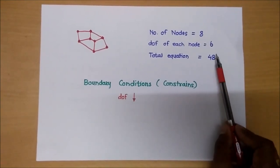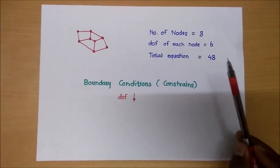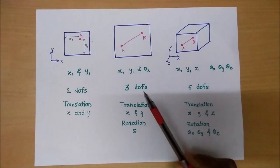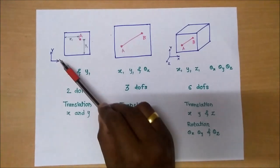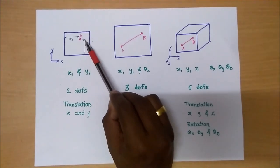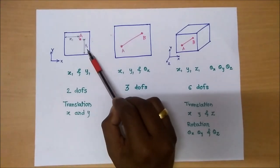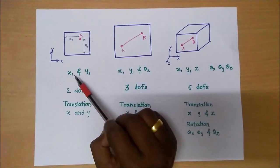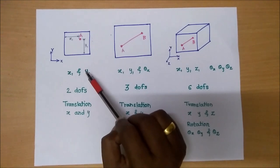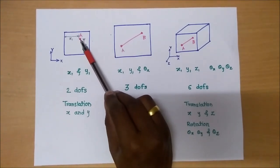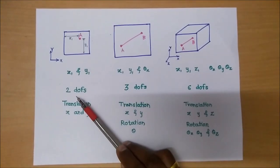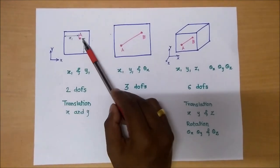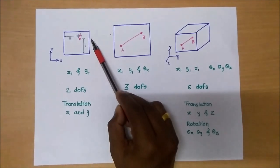So the maximum possible number of equations we have to solve is 48. Now let's take one point A in the XY plane. This point is defined by coordinates X1 and Y1, where X1 indicates the horizontal distance and Y1 indicates the vertical distance. Two parameters — these two coordinate values — are required to define point A in space. So we can say we have two degrees of freedom: translation in X and translation in Y. Due to the action of a force, this point can move in the X direction as well as in the Y direction.